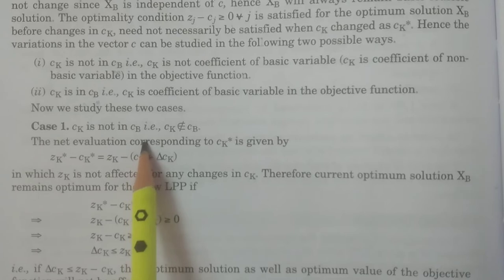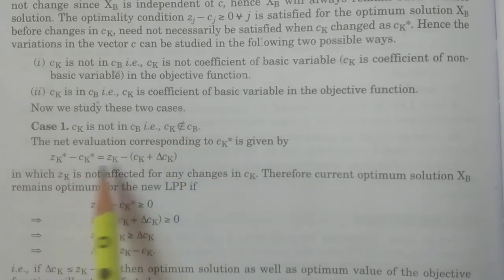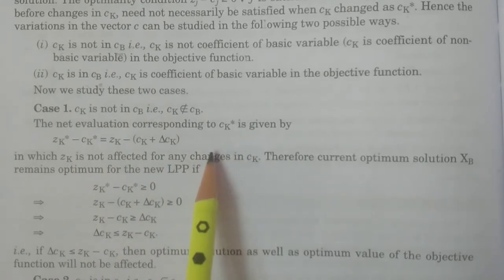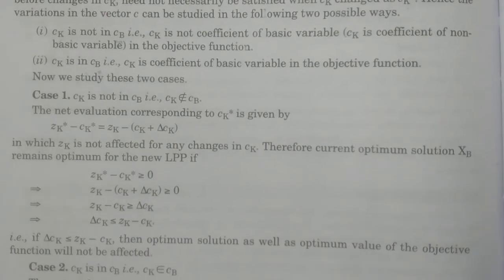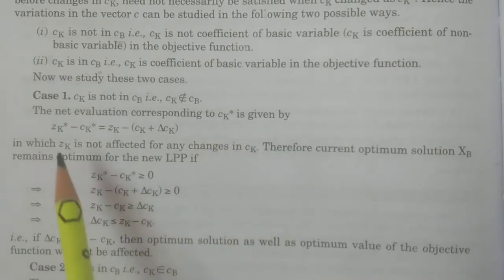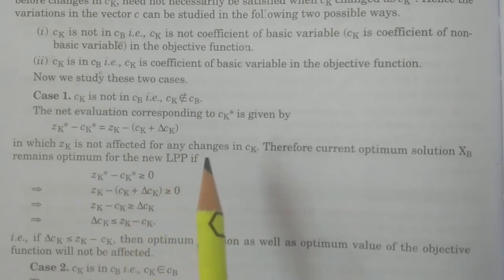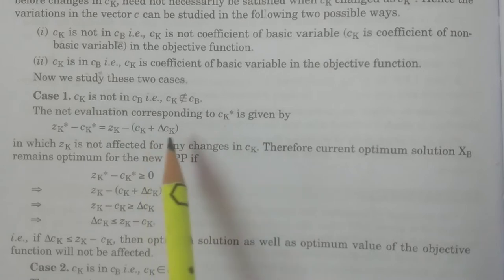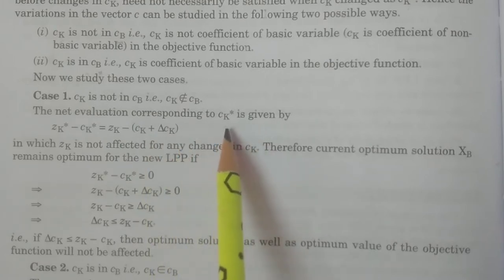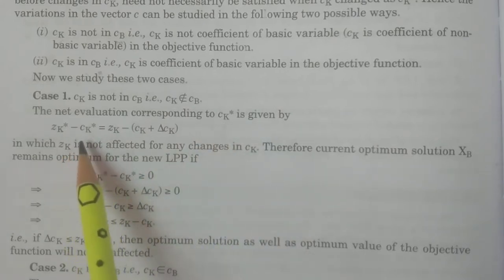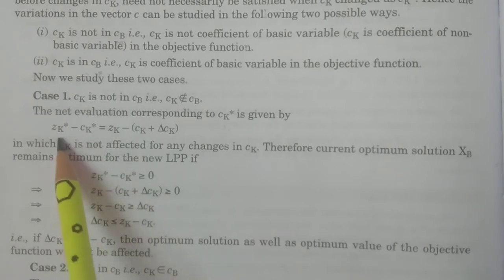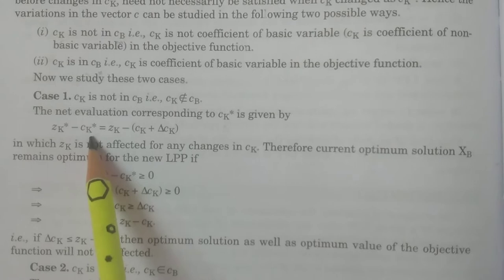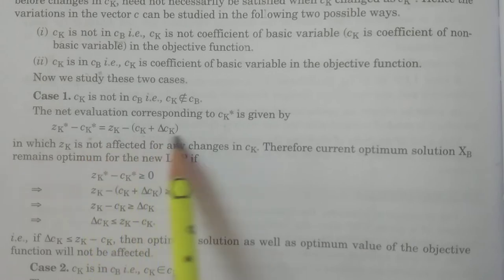Case 1: ck does not belong to cB. We calculate the net evaluation corresponding to ck*, that is zk* - ck*. Usually we have zj - cj for j = 1, 2, ..., n, but now we concentrate only on the value corresponding to ck*. zk* - ck* equals zk - ck*, which is zk - (ck + delta ck). Why is zk unchanged? Because z is not affected by changes in ck.